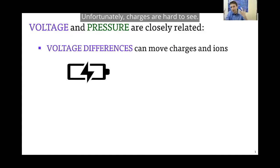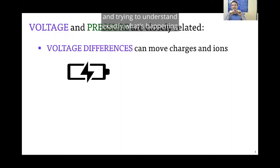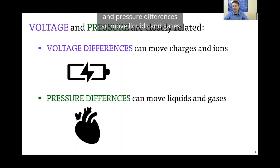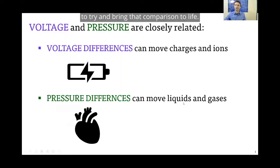All right, so that's what voltage is—a configuration of charges. Unfortunately, charges are hard to see. It's hard to look at a single neuron and try and understand exactly what's happening in those cells of our brain and nervous system. So voltage differences can move charges and ions, and pressure differences can move liquids and gases. I'm going to show you a couple quick demos to bring that comparison to life.